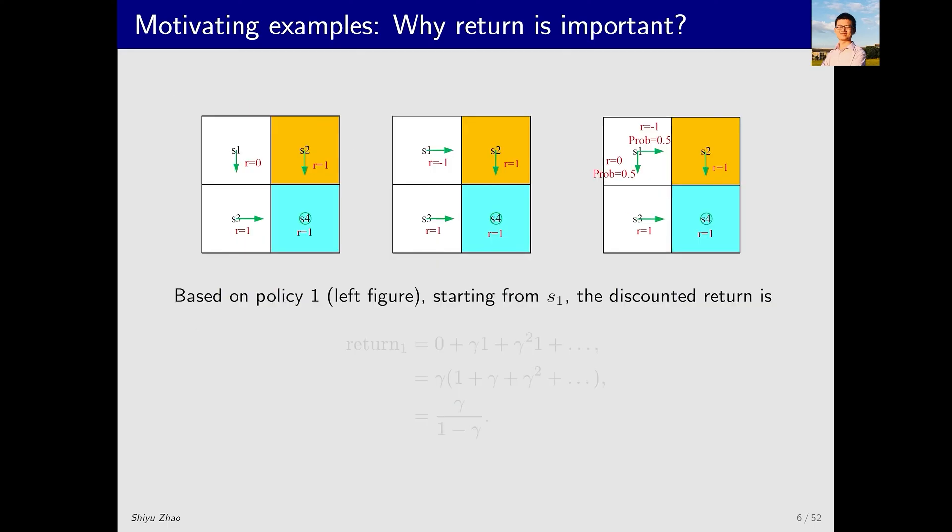Let's calculate the returns for the three policies. For the first policy, starting from S1, the trajectory involves moving first to here and then here. From S1 to S3 the reward is 0, and from S3 to S4 the reward is 1, and then the agent stays at S4 thereafter, and the reward is 1. Taking the discount rate into account, we can obtain the sum of the rewards as gamma over 1-gamma. This is the return for the first policy.